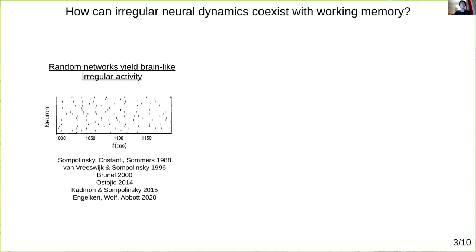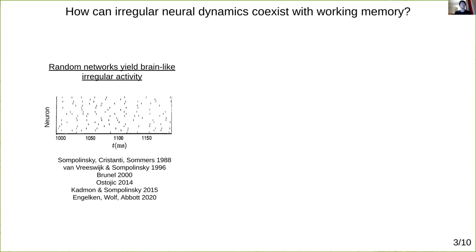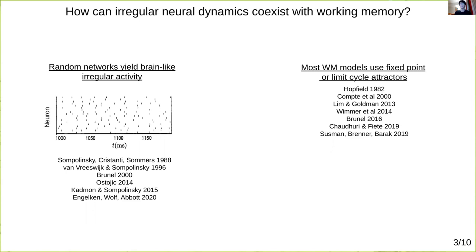On the one hand, much fascinating theoretical work has shown how random neural networks can generate brain-like irregular activity, as seen by the irregular neural spiking in this simulation by Brunel. Most neural models of working memory, however, store information in fixed points or limit cycles, with irregular firing usually thought of as arising from external noisy inputs.